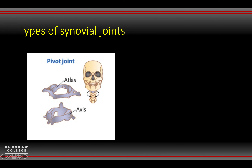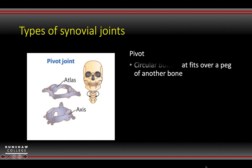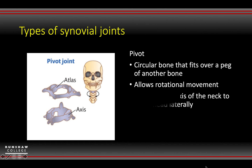Then you've got a pivot joint. This pivot joint, seen here in the skull, is sat on the atlas and axis, which are very irregular bones that allow the rotation movement of the skull itself. It allows you to turn your head left and right.